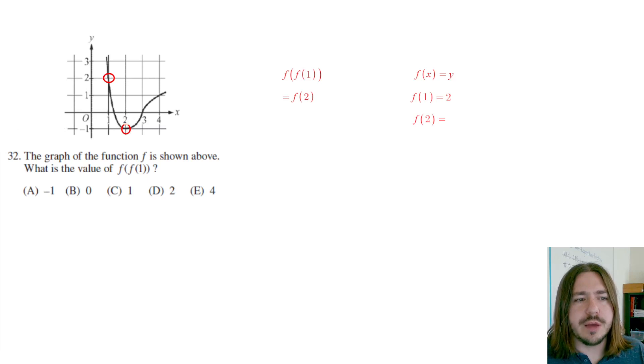So there's a point 2, negative 1 on this curve. So 2, negative 1 will satisfy this f of x equals y business. Really, this function notation is just another way of writing coordinates and showing a functional relationship. So f of 2 equals negative 1, and that's it. That's going to be our solution here.